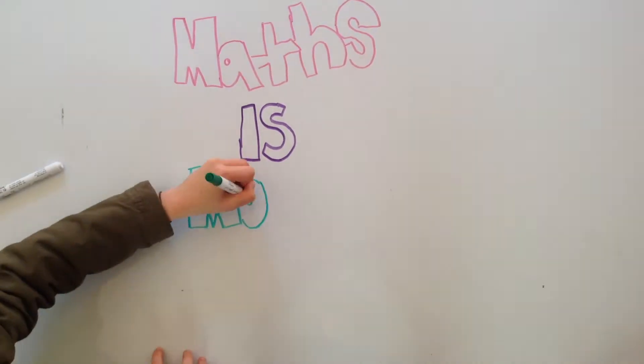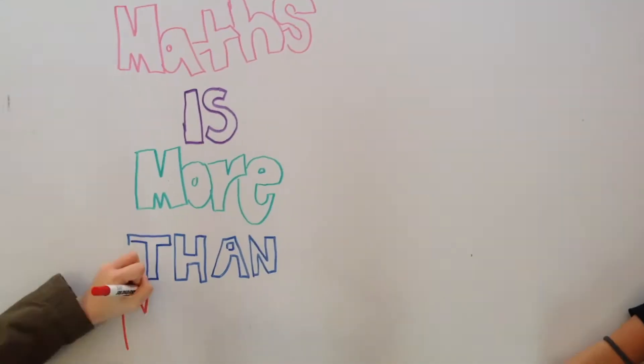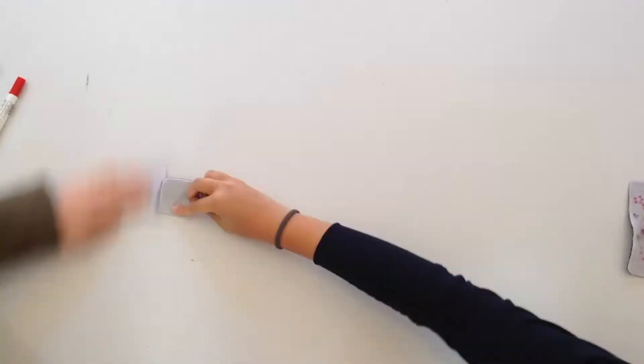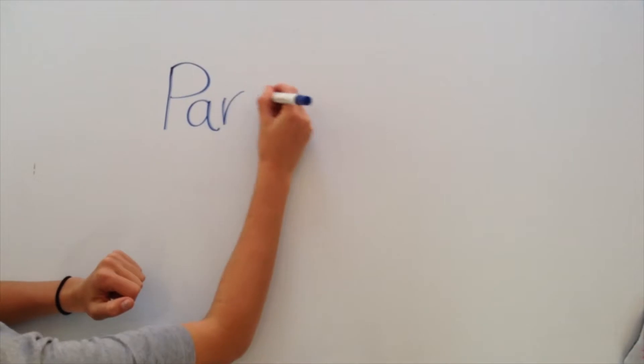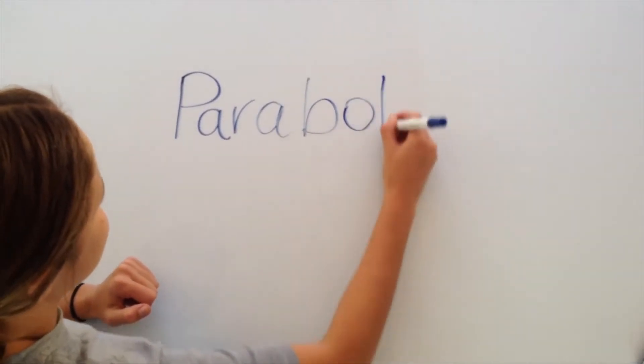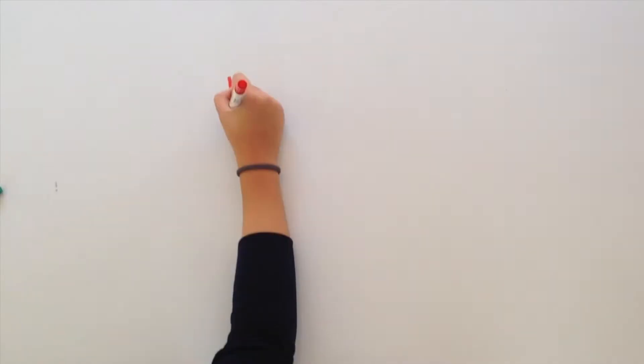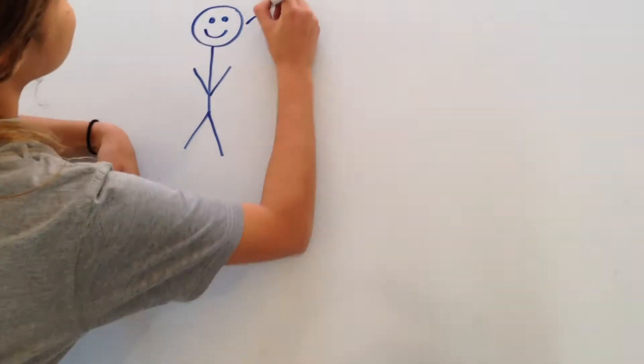Maths is more than numbers. Parabolas. Parabolas are a curve that have one line of symmetry. It originated from a new Latin term that means something similar to compare or balance.